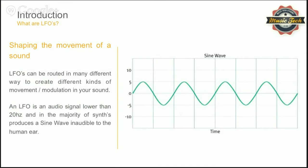Basically you have two parameters. You have the rate, which is how fast the sine wave — or whatever wave you're using — moves through. The closer together the cycles, the faster it moves. You also have the intensity or depth, which is how much modulation you're going to apply. This can be routed to many different things, and ultimately it's just a signal path chained into other elements.